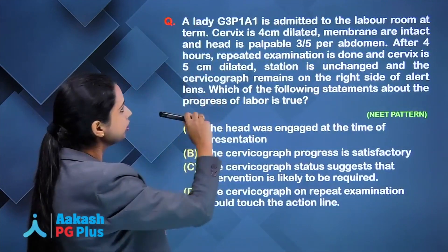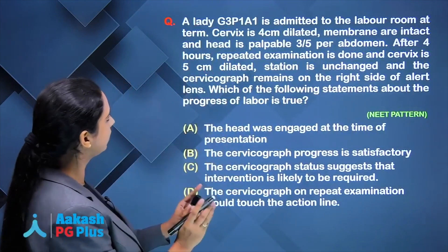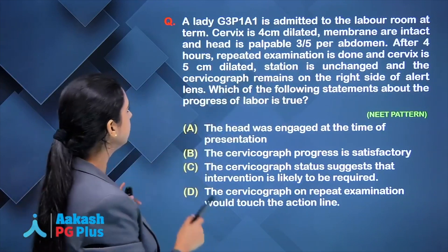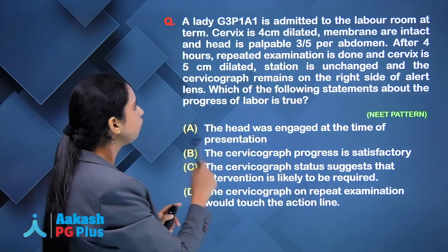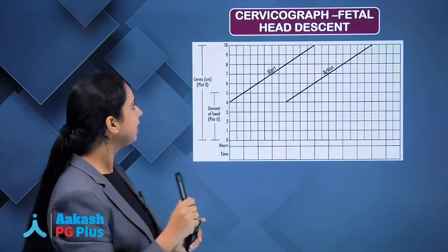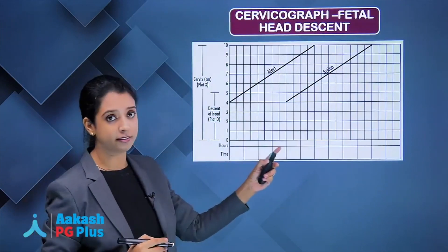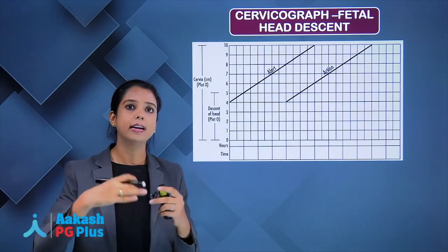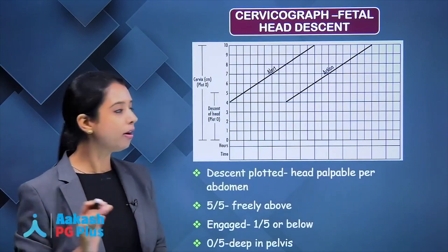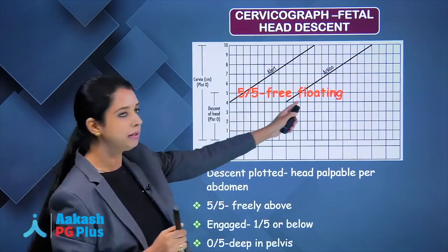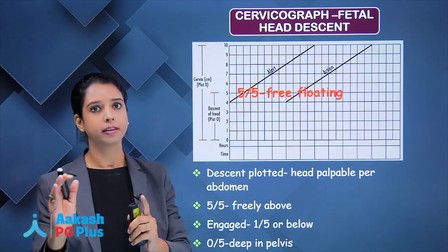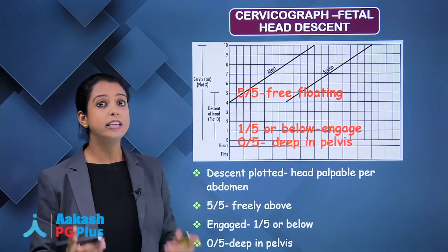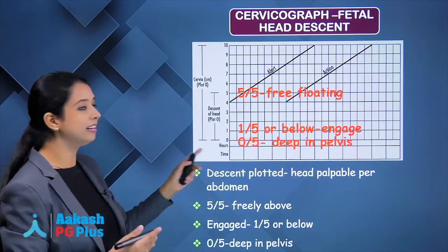A gravida 3 para 1 patient is admitted with cervix 4 cm, membranes intact, head palpable 3/5. After 4 hours, cervix is 5 cm with station unchanged. In cervicograph, descent of head is plotted from 5 to 0, based on parts of head palpable per abdomen. 5/5 means head is free-floating; 1/5 or below means head is engaged; 0/5 means head is deep in the pelvis.